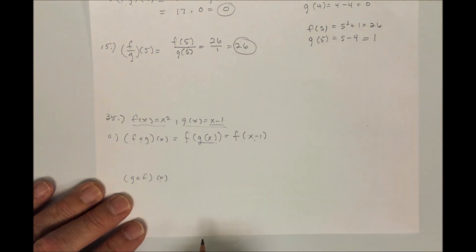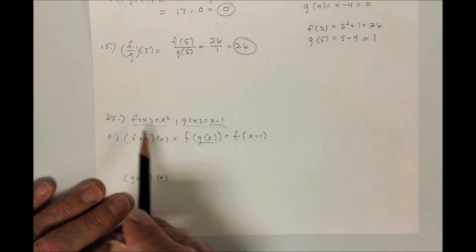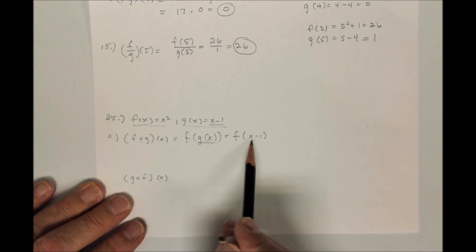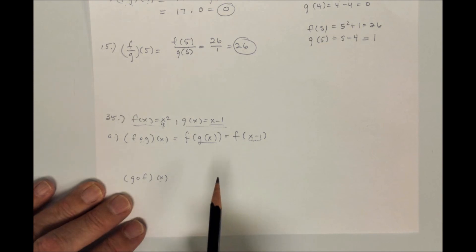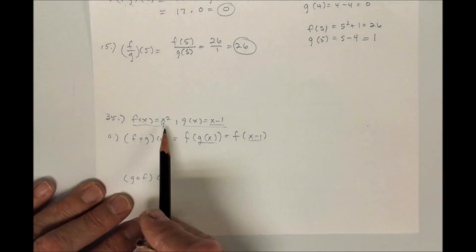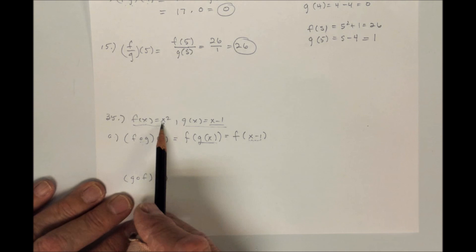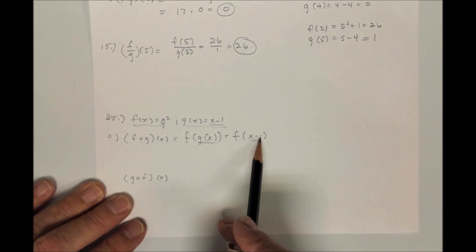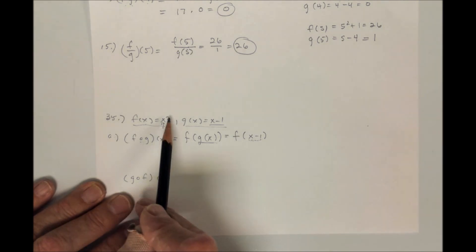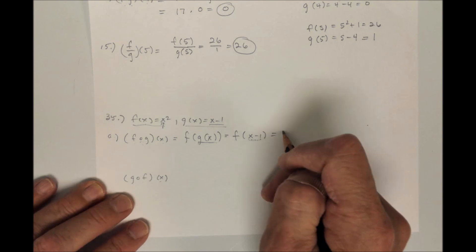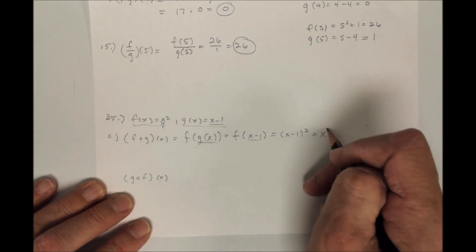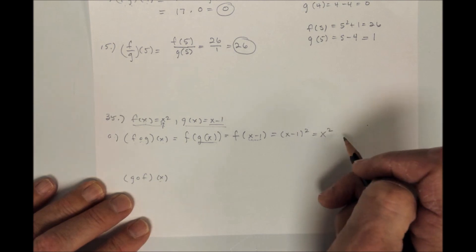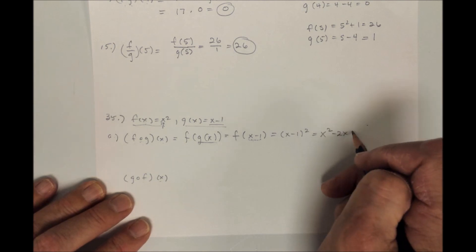I'm going to find f of x minus 1, plugging all of x minus 1 in for the variable. This is the tricky part, because people don't like plugging in weird stuff for the variable. In for x, I'm going to replace x with x minus 1. The x is being squared, so the x minus 1 is being squared. You can go ahead and square it out: x minus 1 times x minus 1, do FOIL, and you get x squared minus 2x plus 1.